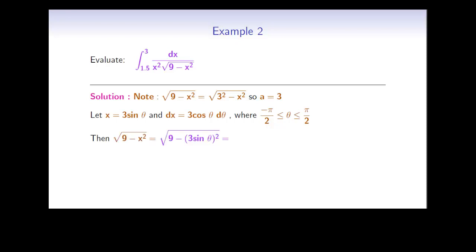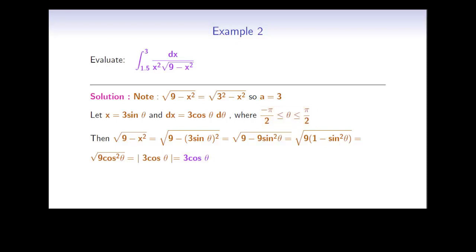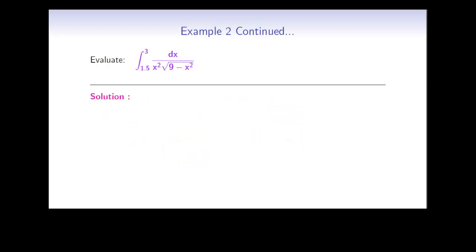Now let's simplify the square root of 9 minus x². Replacing x with 3 sine theta, multiplying out the brackets, and factoring a 9, we see that 1 minus sin² theta equals cos² theta. Taking the square root gives the absolute value of 3 cos theta. But on the interval from −π/2 to π/2, cosine theta is positive, so we don't need the absolute values. Therefore, the square root of 9 minus x² simplifies to 3 cos theta.